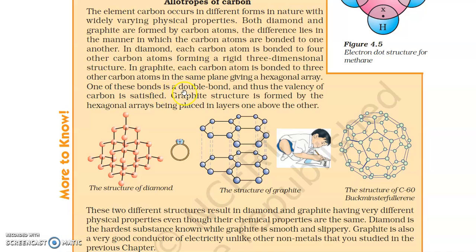One of these bonds in graphite is a double bond, and thus the valency of carbon is satisfied — the valency of carbon equals four electrons, completing its octet. The graphite structure is formed by hexagonal arrays placed in layers, one above the other.